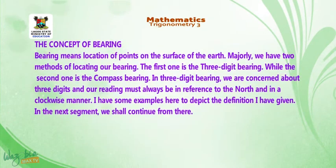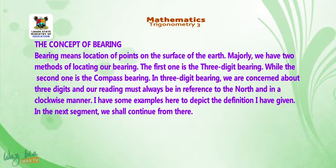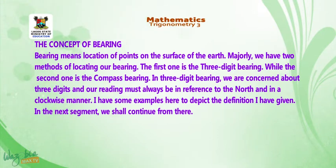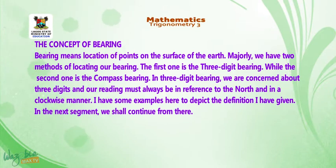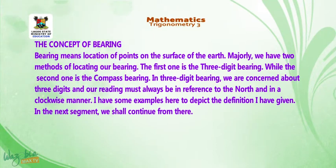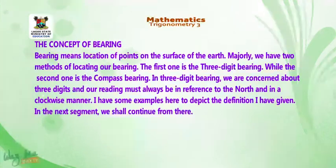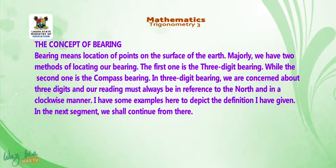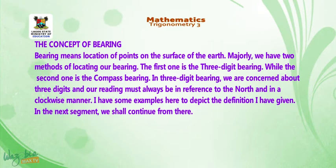Let us now move to the concept of bearing. Bearing means the location of points on the surface of the Earth. Majorly, we have two methods of locating our bearing: the first is the three-digit bearing, and the second is the compass bearing. In three-digit bearing, we are concerned about three digits, and our reading must always be in reference to the north and in a clockwise manner. In the next segment, we shall continue from there.